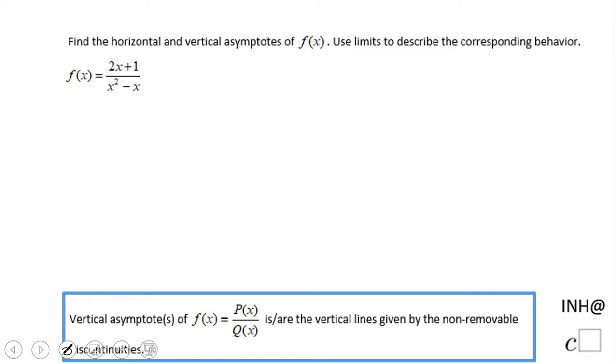Welcome, welcome. I'm going to look at this example of finding horizontal and vertical asymptotes, and we're going to try to use limits to describe the behavior of this rational function.